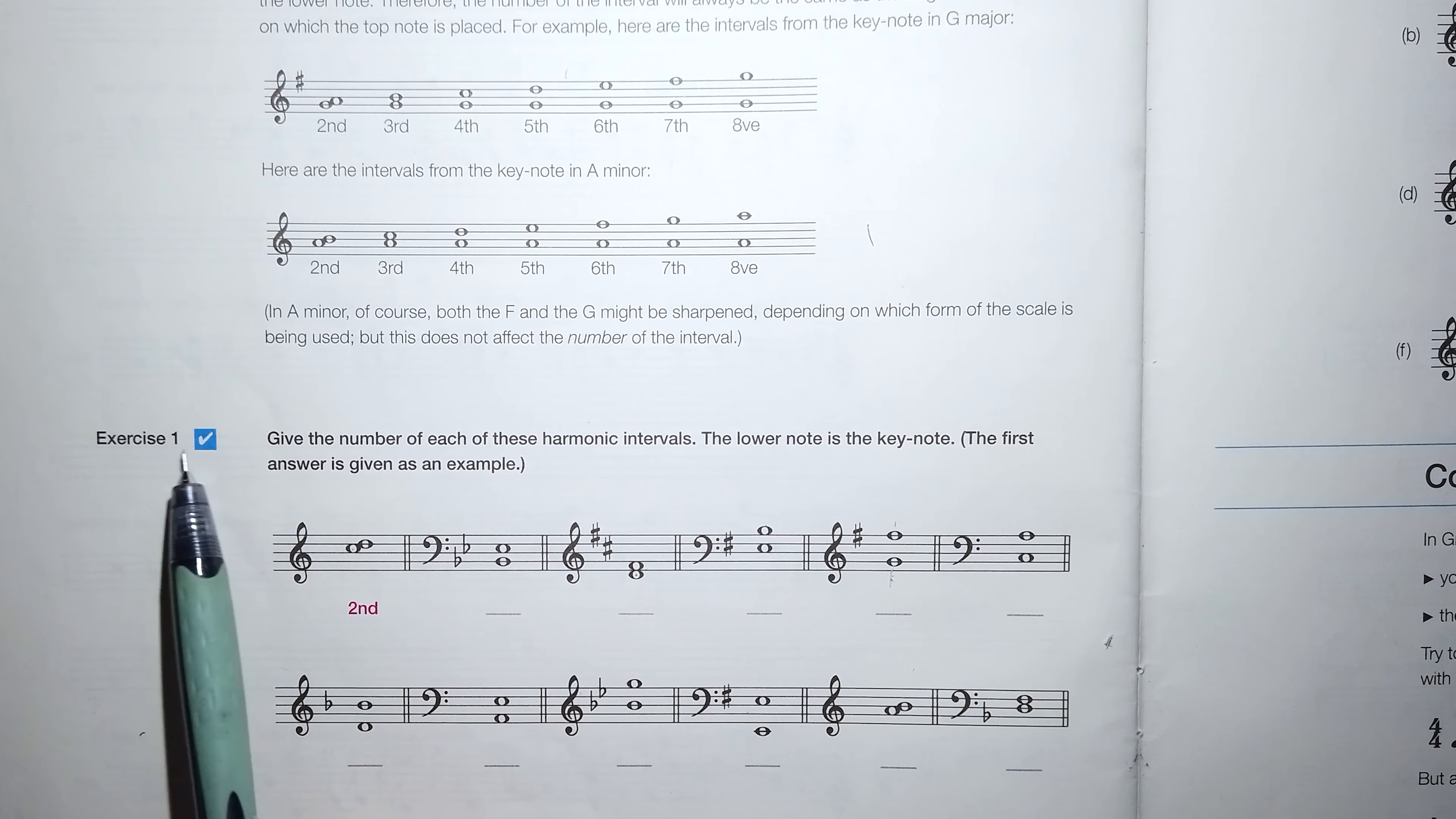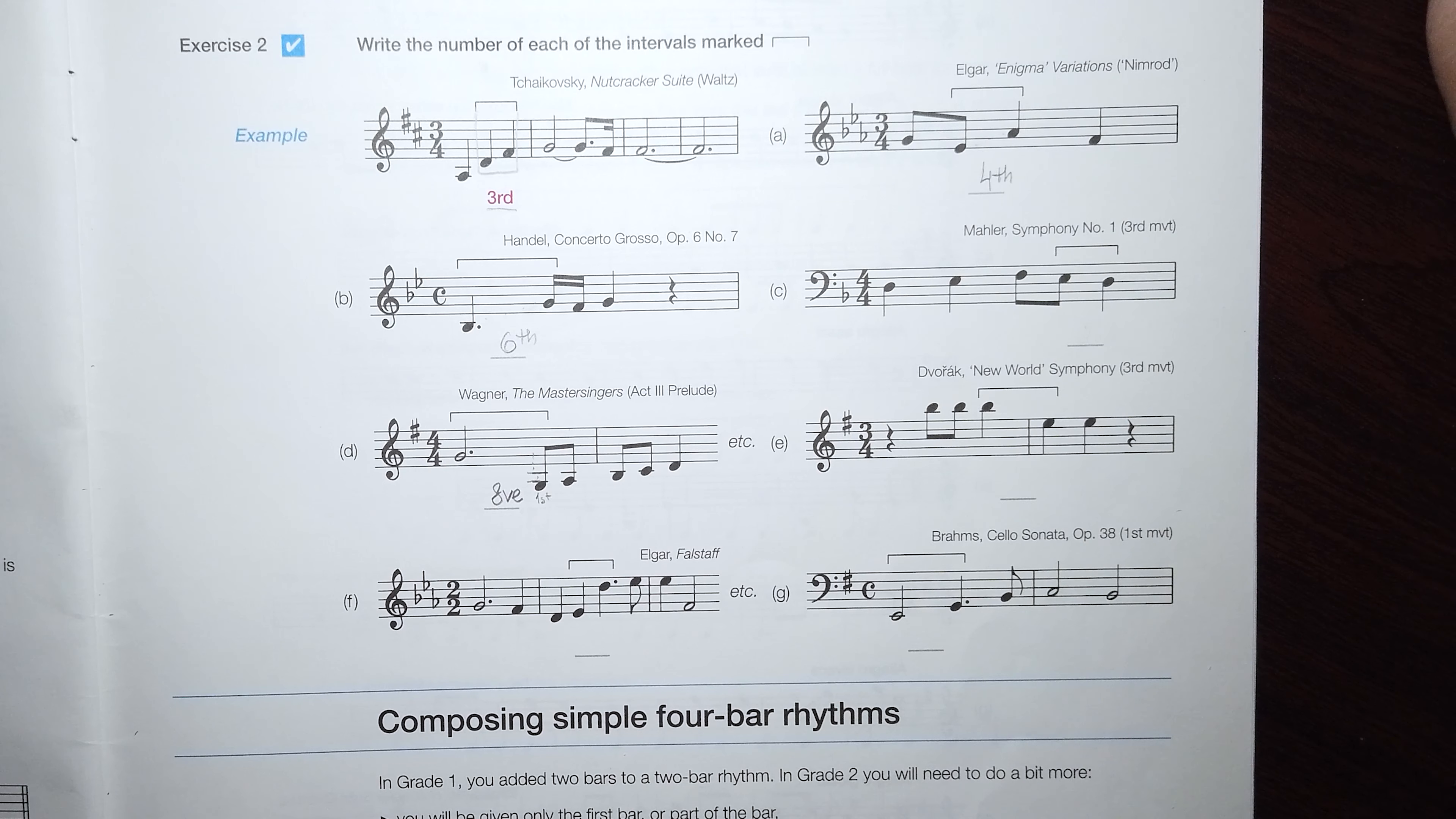Here we have the notes written in the opposite direction, but we have to count from the lowest note to the upper note, and gradually we will reach the octave. We have to count each space and each line. Please continue all other tasks by yourself and send me your homework on my email. Thank you.